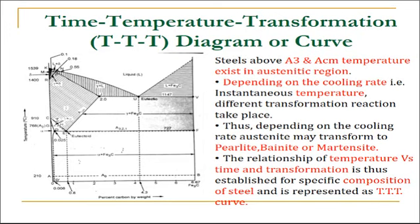The time-temperature transformation diagram, also known as the TTT curve or TTT diagram, describes the transformation behavior of steel. Steels above A3 and Acm temperature exist in the austenitic region, as clear from the iron-carbon diagram. Depending on the cooling rate, different transformation reactions take place, and austenite may transform into pearlite, bainite, or martensite. The relationship of temperature versus time and transformation is thus established for a specific composition of steel and represented as the time-temperature transformation, or TTT curve.